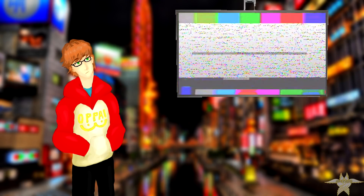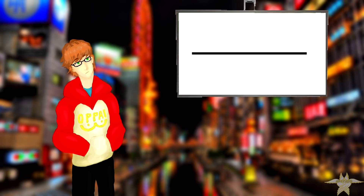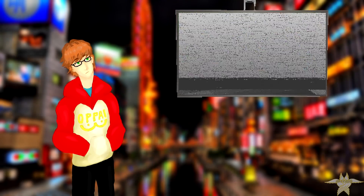We'll start simple. First up is, fittingly enough, the first dimension. The first dimension is length, about as simple as one being can get. Being 1D makes you have length and nothing more. You're a line on a separate longer line and you can only move in two different directions along said line: forwards and backwards. Pretty dull life if you ask me, so let's move on to something a bit more exciting.